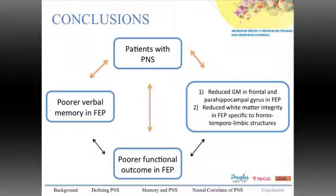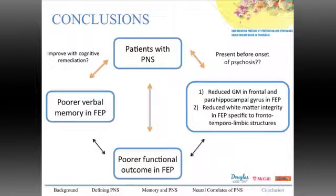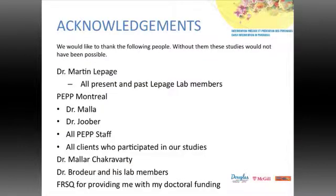Our studies helped shed light on persistent negative symptoms, showing a prevalence rate of about 27%. These individuals present with poor functional outcome, poor verbal memory, reduced gray matter volume, and reduced white matter integrity. Questions remain: if we were to treat persistent negative symptoms effectively, would this result in improved verbal memory? Or would cognitive remediation specific to verbal memory help improve persistent negative symptoms? And are these neural correlates present even earlier in the illness? Thank you all for listening.